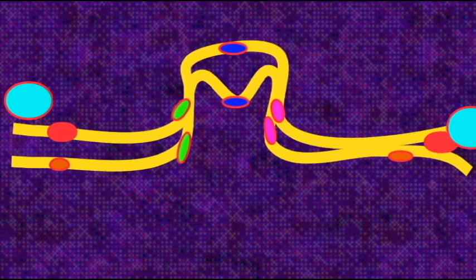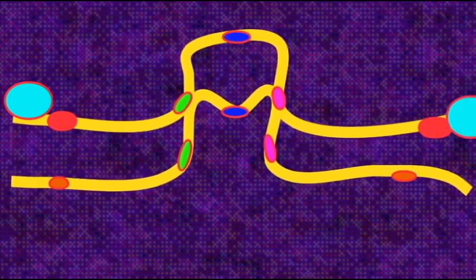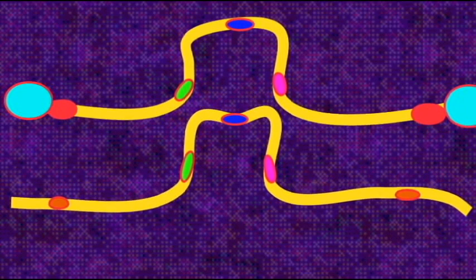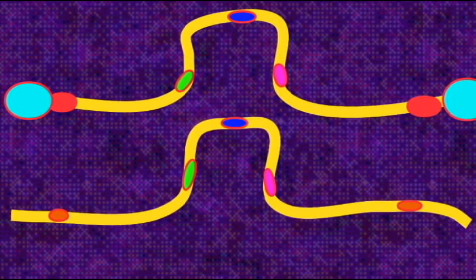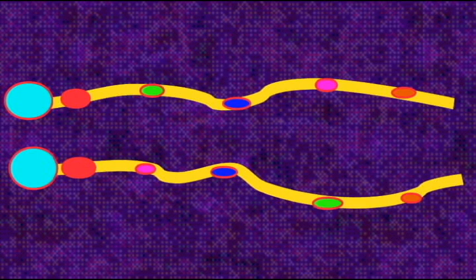Some have two centromeres and will be pulled apart, others lack centromeres and will then be lost and not go to either pole during cell division.